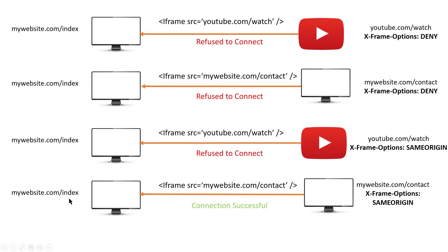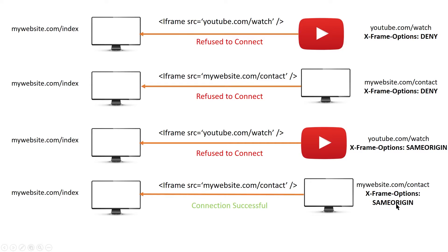Finally, we have our website which now points to an iframe under the same website — mywebsite.com/contact — while XFrame Options is set to same-origin. This time, our website will connect because XFrame Options is set to same-origin and we are pointing to the same host.